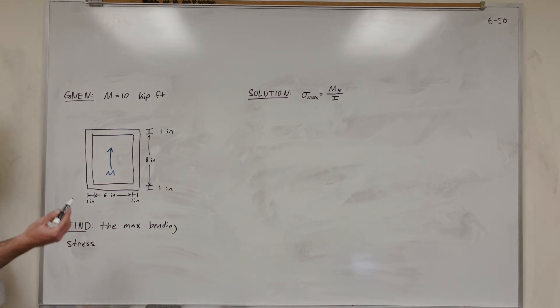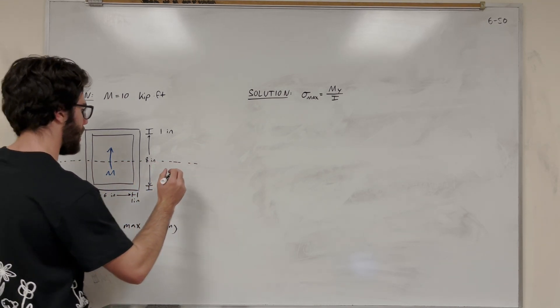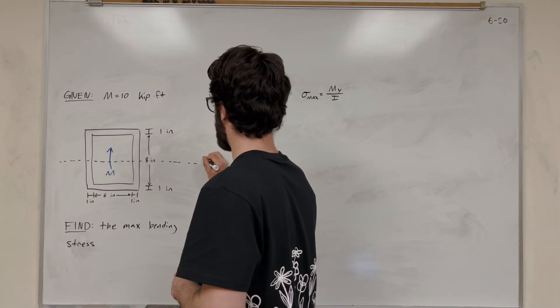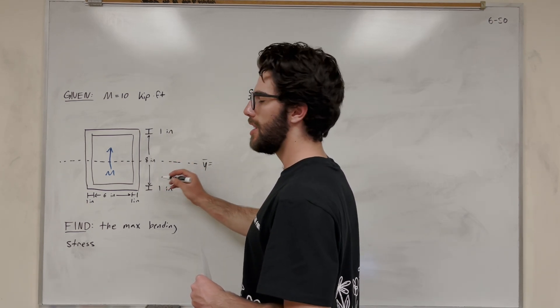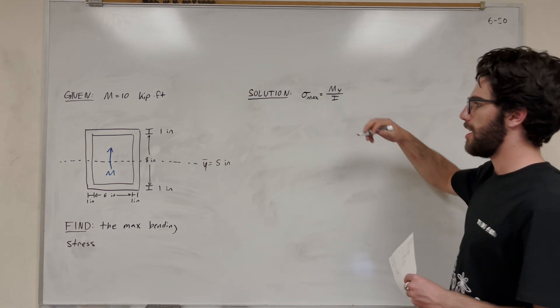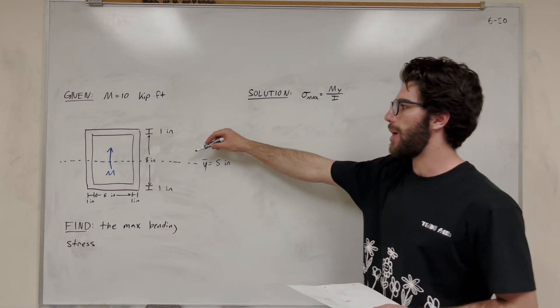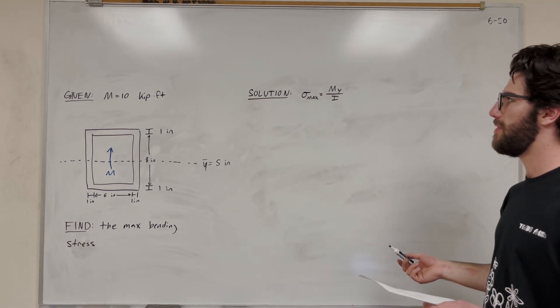So first of all, let's find out the center of mass of this shape. Pretty easy to tell. It's going to be right in the center. It's going to cut in half the shape because it's symmetrical. We're going to label this y-bar and let's set that equal to 8 inches plus 1 inch, so it's going to be equal to 5 inches. Y-bar is going to be 5 inches because that's the furthest away we can get from the center of mass, that's where the maximum bending stress is going to be found.